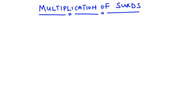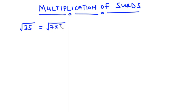In the previous lesson, we learned that the square root of a number can be expressed as the product of the square root of its factors. So if we have the square root of 35, then we can express this as the square root of 7 times 5, and this is also equal to the square root of 7 times the square root of 5.